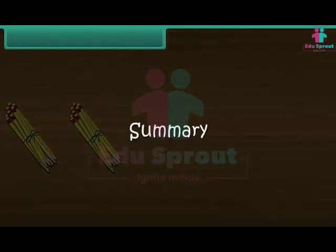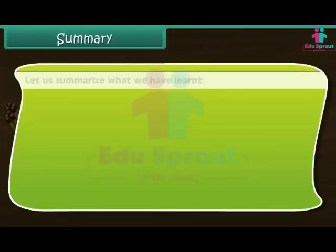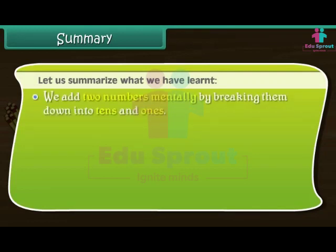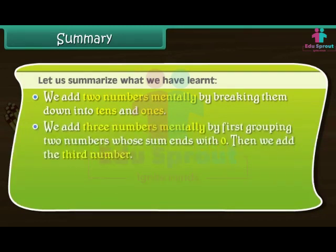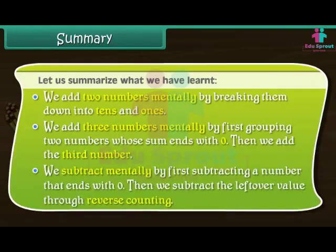Summary — let us summarize what we have learnt. We add 2 numbers mentally by breaking them down into tens and ones. We add 3 numbers mentally by first grouping 2 numbers whose sum ends with 0, then adding the 3rd number. We subtract mentally by first subtracting a number that ends with 0, then subtracting the leftover value through reverse counting.